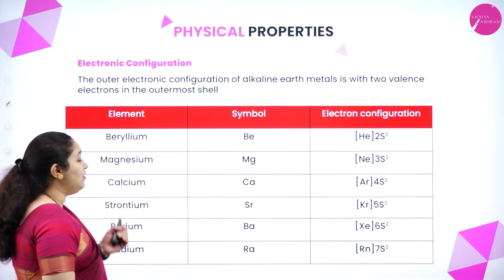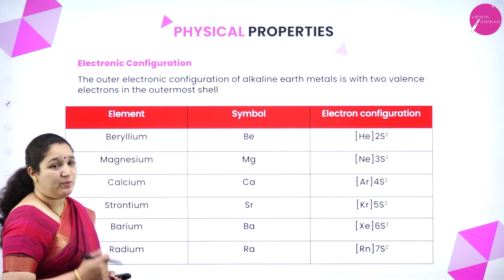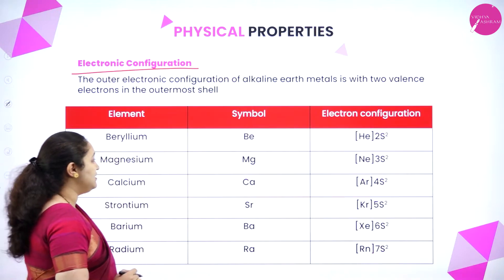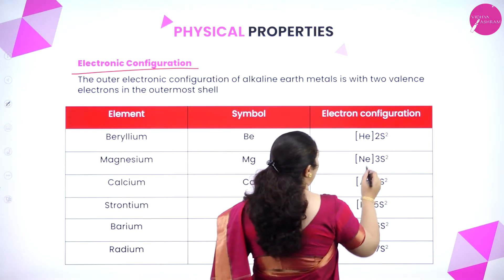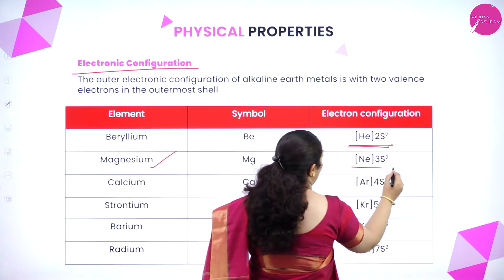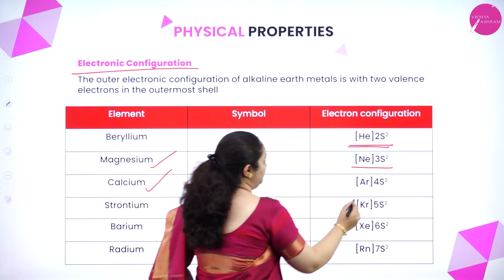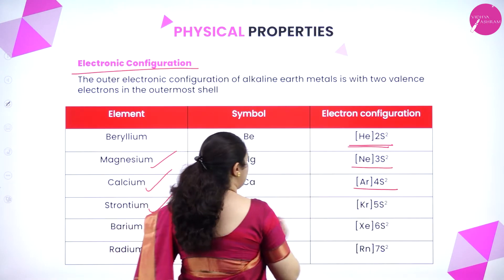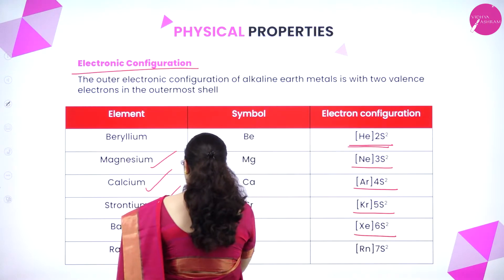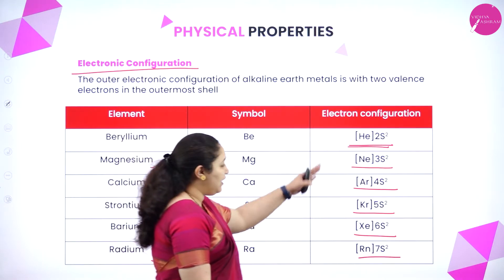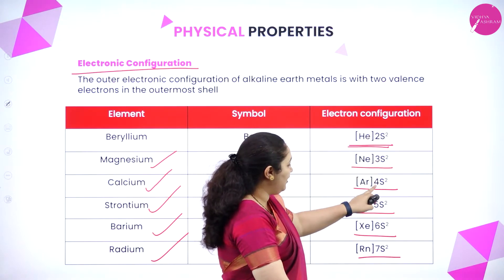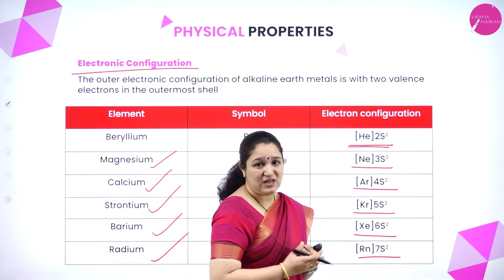Under physical properties, the first is electronic configuration. Beryllium (Be) is [He] 2s², magnesium is [Ne] 3s², calcium is [Ar] 4s², strontium is [Kr] 5s², barium is [Xe] 6s², and radium is [Rn] 7s². As we come down the group, the number of shells increases from 2 to 7, so the atomic size goes on increasing. All these elements have a completely filled s orbital.